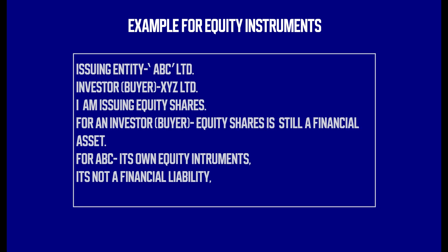Now I am taking an example of an equity instrument. The same scenario: ABC is the issuing entity and XYZ is the investor. This time I am issuing equity shares of my company — not debentures as in the previous case. For the investor, it is still a financial asset because it is an equity share. But for ABC Limited, it is its own equity instrument — it's not a financial liability. It is simply equity share capital of ABC — it's equity, not a liability.